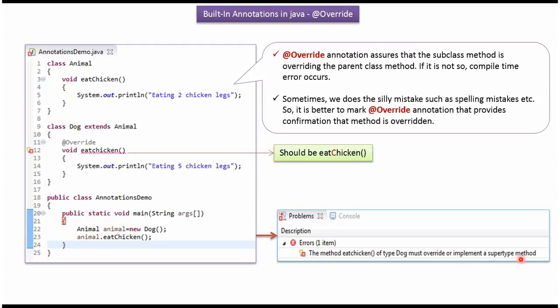So in this way, @Override annotation makes sure the subclass overrides the parent class method.